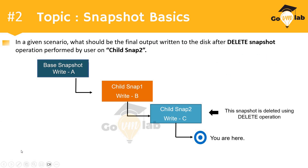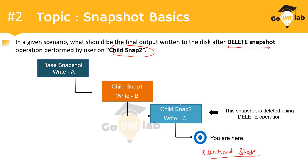Now in this particular question, the diagram looks similar, but the operation has changed. The user is performing a delete snapshot operation on just child snap 2. From the current state, the user goes to the snapshot UI, clicks delete, and deletes the snapshot named child snap 2 which has data value C.